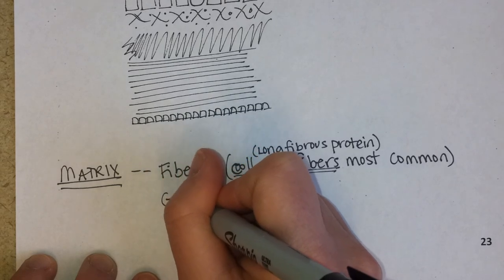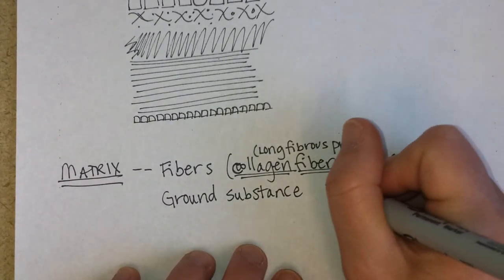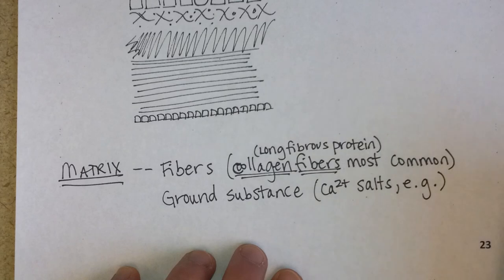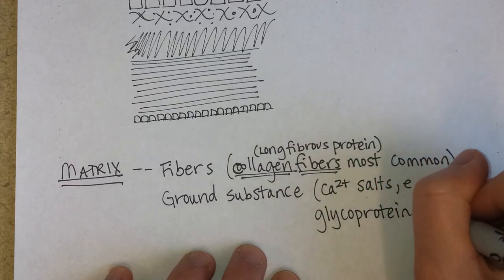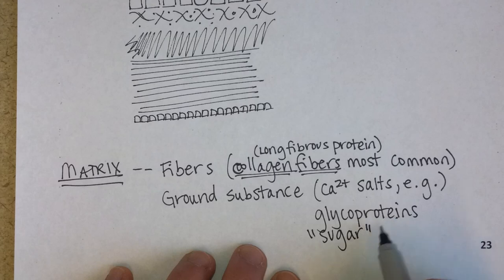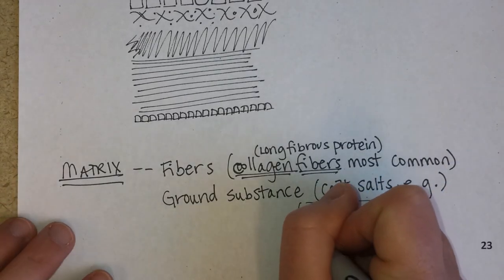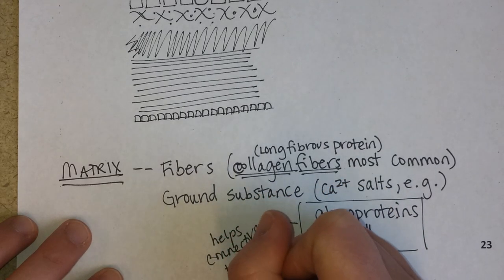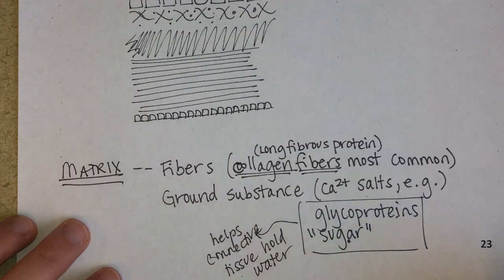Matrix also contains what's called ground substance. Typically this is something like calcium salts in bone, for example, or something like glycoproteins. Glyco means sugar, so these are proteins that have a sugar attached to them. The whole point is that it helps connective tissue hold water. Because of these glycoproteins, water is attracted to connective tissue. And as we age, these tend to break down, so our connective tissue gets weaker and more brittle.